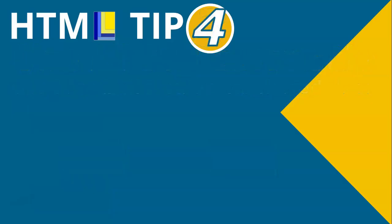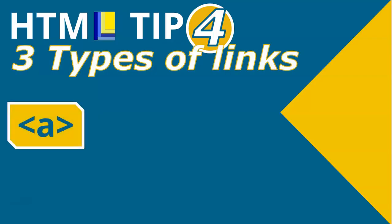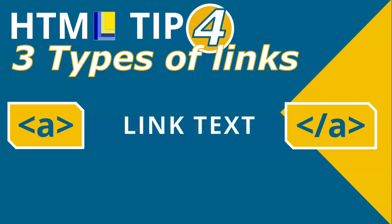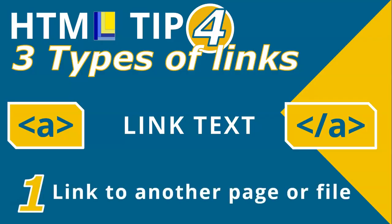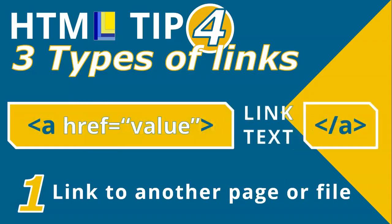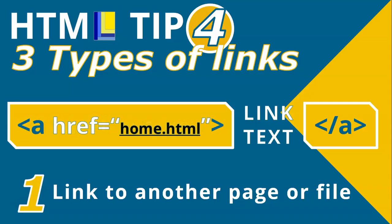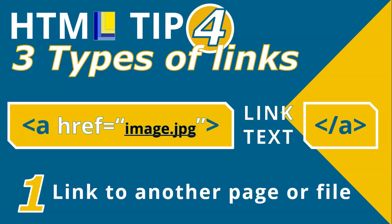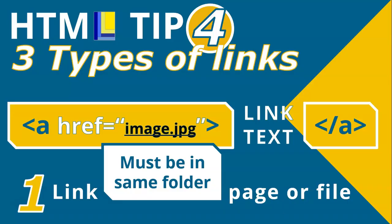HTML tip number four is knowing the three different types of links. You start with an A tag and close it, and the text in between becomes the hyperlink. The first type is a link to another page or file. Use the href attribute with a value that includes the full file name including the file extension — for example, home.html for a web page, or image.jpg for an image. Remember, these files must be in the same folder as the main web page for the link to work.